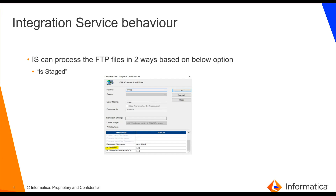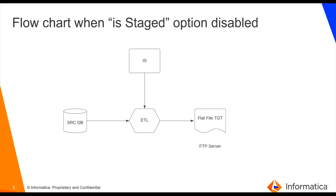Coming to the integration service behavior and how the process takes place, the integration service can process or access files in two ways based on the staged option. You can find this staged option in the FTP connection browser or editor. In the next slides we are going to discuss what the difference is when staged is disabled or enabled.